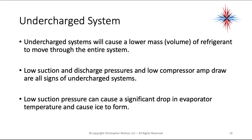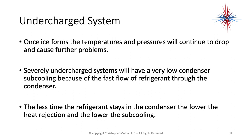Undercharged systems are also important. We have to make sure we're not looking at a kinked line because some of the characteristics are similar. Undercharged systems will cause a lower mass — that's a volume of refrigerant — to move through the entire system. Low suction and discharge pressures and low compressor amp draws are all signs of an undercharged system. Low suction pressure can cause a significant drop in evaporator temperature and can cause ice to form. Once ice forms, temperatures and pressures will continue to drop and cause further problems. Severely undercharged systems will have very low condenser sub-cooling because of the fast flow of refrigerant through the condenser — the less time refrigerant stays in the condenser, the lower the heat rejection and the lower the sub-cooling.